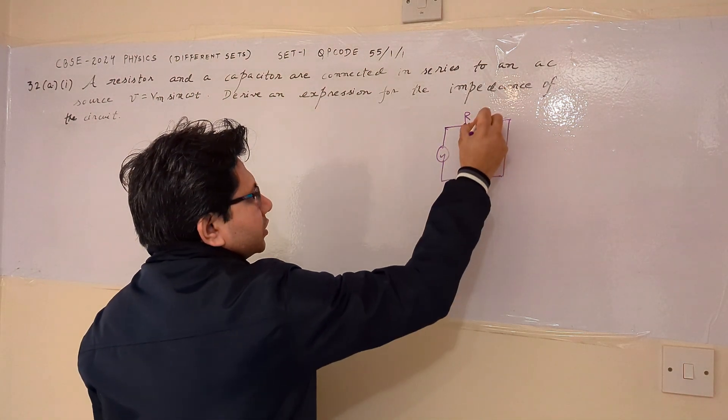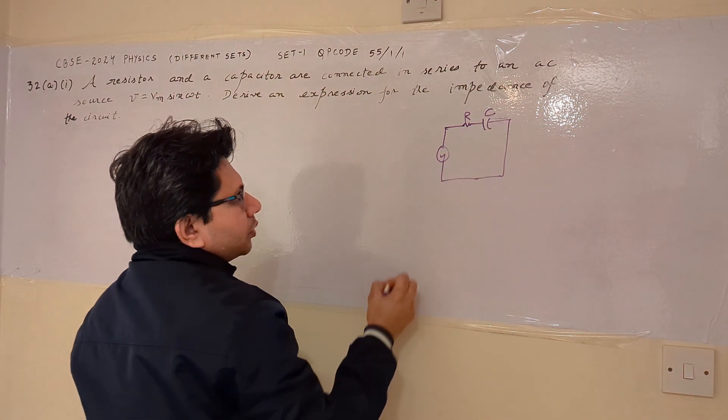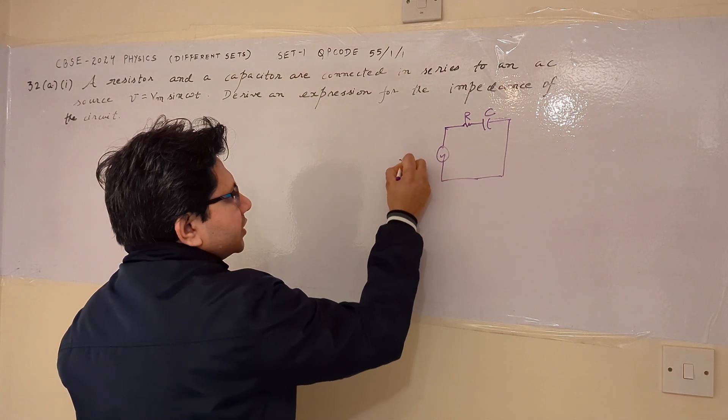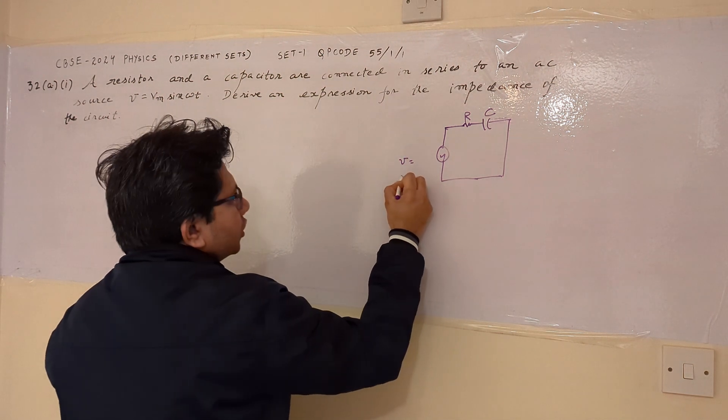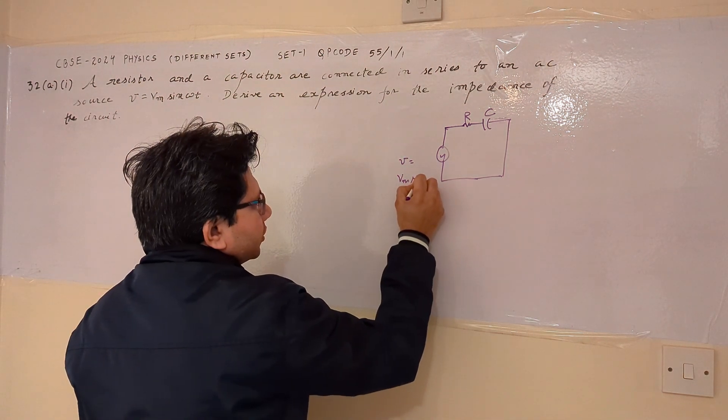This is the value of resistance R and this is the value of capacitance C. The applied signal is given as V equals to Vm sin omega t.